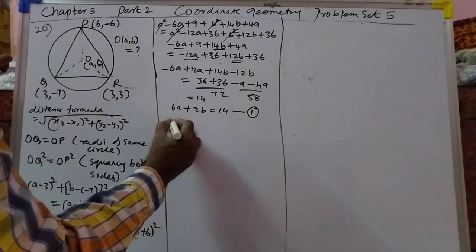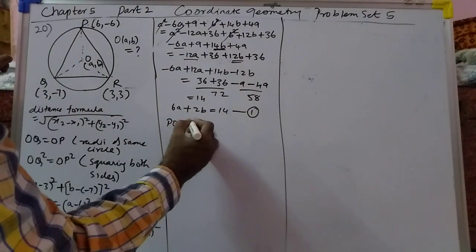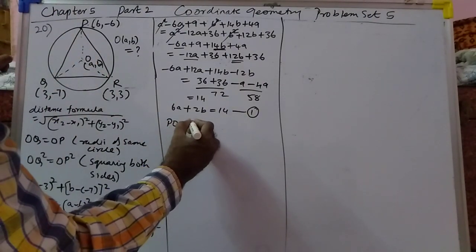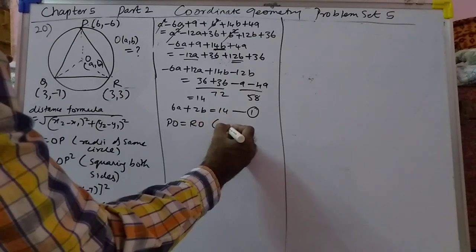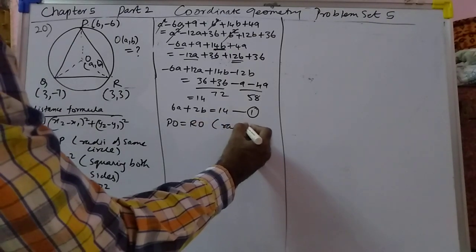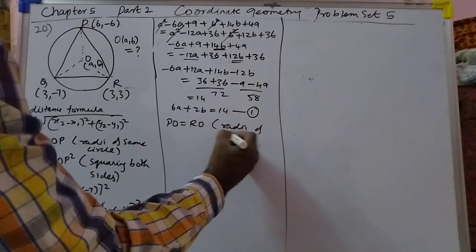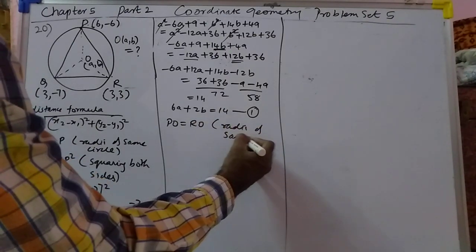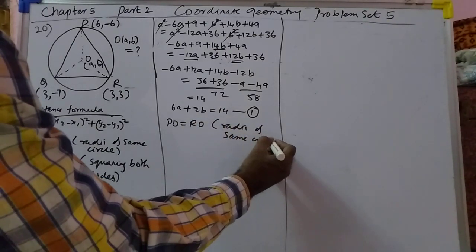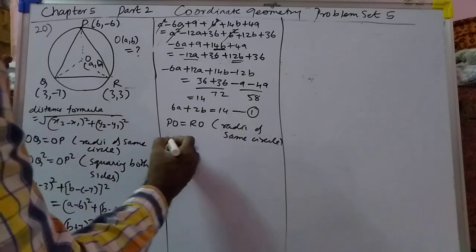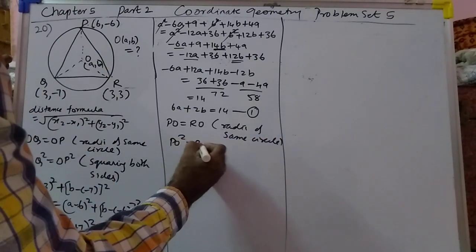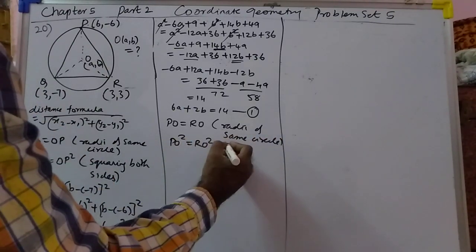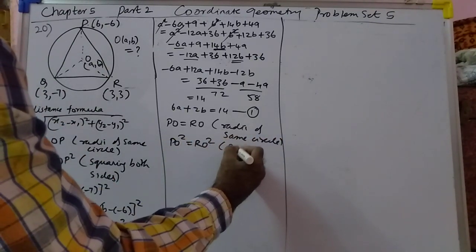Now comparing, we find equation 2. Here PO is equal to RO — the radius of the same circle — so therefore PO² is equal to RO², squaring both sides.